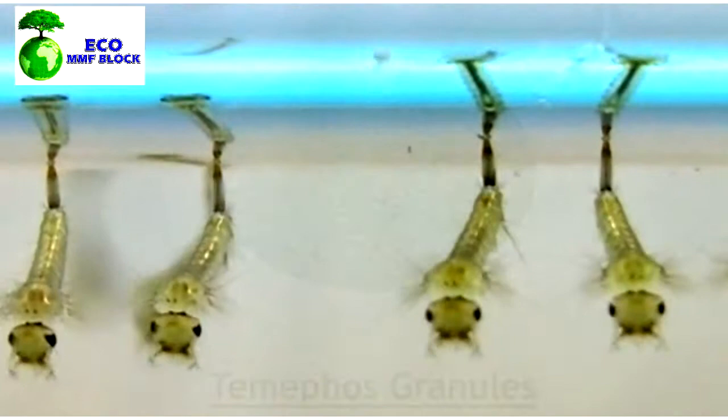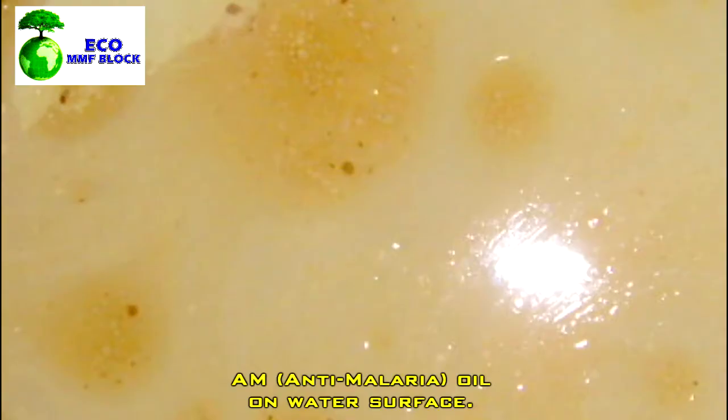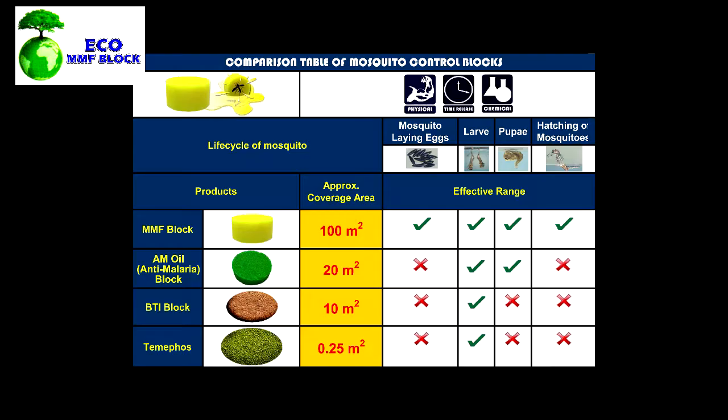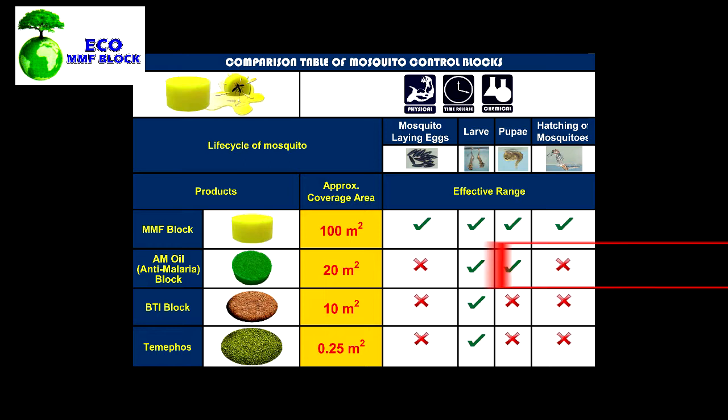Temephose is an organophosphate used to control mosquito larvae. Oils are lightweight petroleum distillates used to form a coating on top of water to suffocate larvae and pupae. However, BTI and temephose are only effective against the larvae stage of the mosquito life cycle. Oils are effective for two stages — larvae and pupae — but still ineffective against emerging adults or egg-laying mosquitoes.